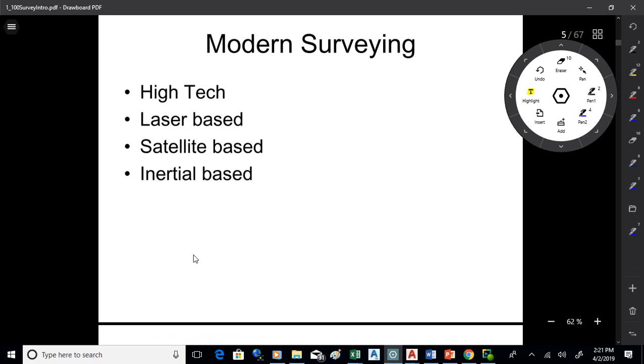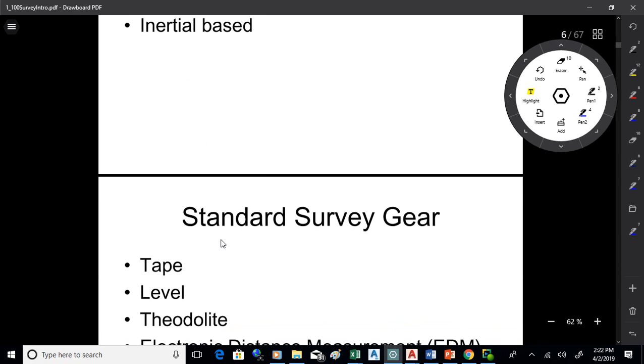Nowadays, if you're with a survey company, there's much more modern equipment. It's really gotten very high tech. There's equipment that uses lasers to measure distance. Of course, we use satellites to measure position and inertial systems. We also use aerial photography now. So there's any number of ways to do surveying.